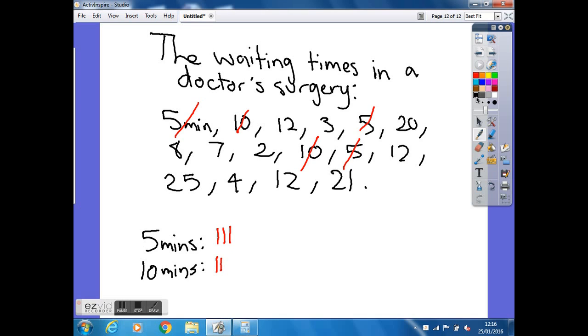The next one we've got in the list was a 12. So 12 mins. We'll cross off how many 12s we have. So 1, 2, 3. So we've got 3 12s. The next one was 3 minutes. So how many 3s have we got? We've got 1. Just the 1 for that.